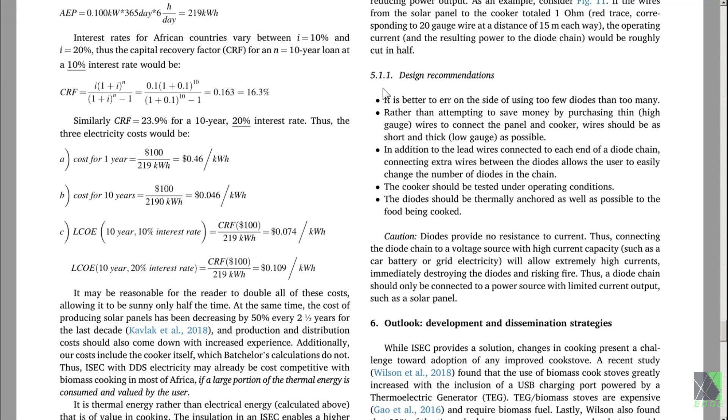For those of you who are interested in using diode chains and diode strings for solar cooker prototypes, I would also pay attention to section 5.1.1, which is design recommendations. Here they're saying it's better to err on the side of using too few diodes than too many. Now I've seen this behavior in my tests and they're saying to put fewer diodes. I actually erred on the other direction. I put too many. It's just a different way of going about it. They're also saying not to use thin wire. Absolutely. You need thick wire. So good copper wire. If you have really thin wire connecting your solar panel, unfortunately, you start getting a mixture of ohmic and diode behavior. And it's very confusing. It can be so hard to get the match correct. So you want to use good quality wire to attach the cooker to the solar panel. In addition to the lead wires connected to each end of the diode chain, connecting extra wires between the diode chain allows the user to easily change the number of diodes in a chain. Exactly what I'm talking about in some of my videos. You can use this as a power supply.